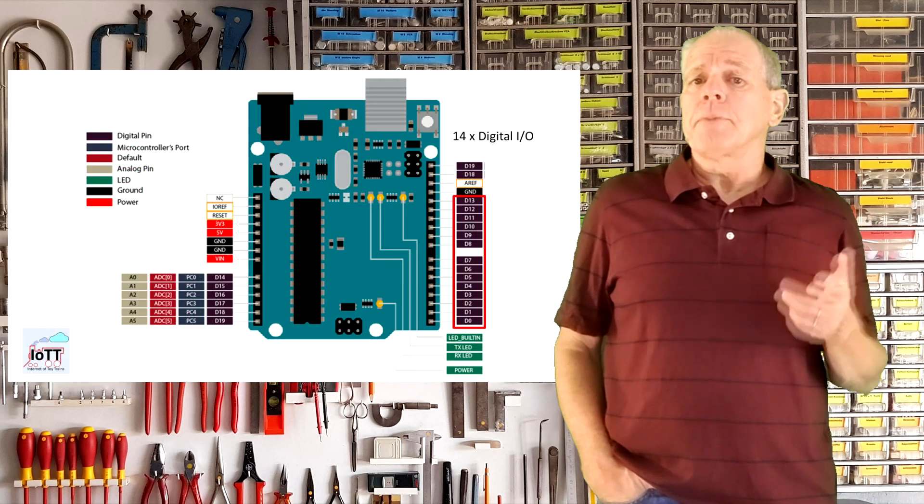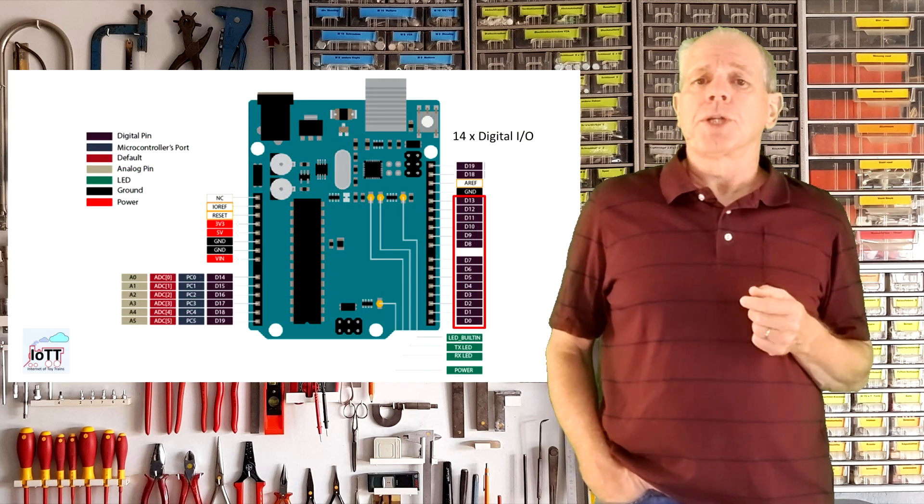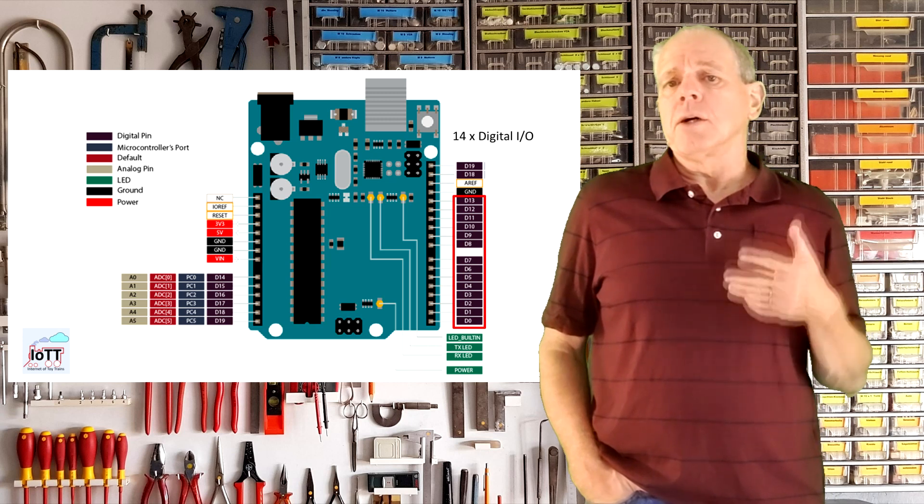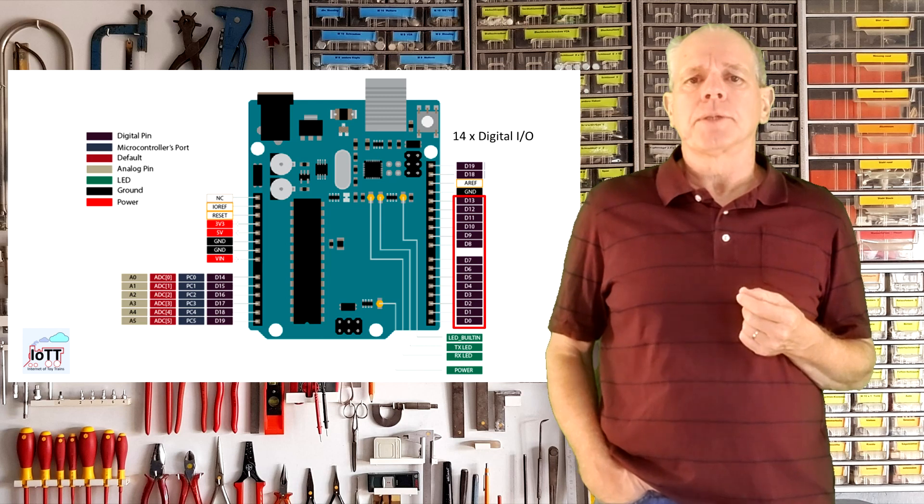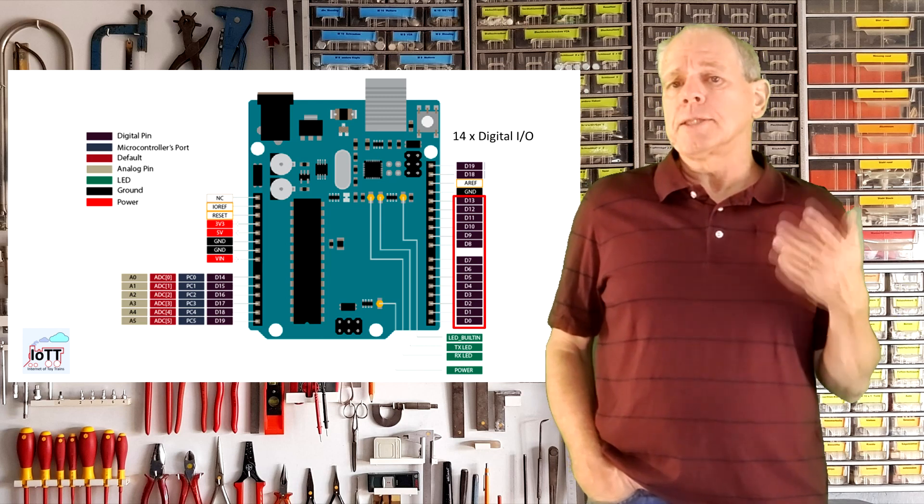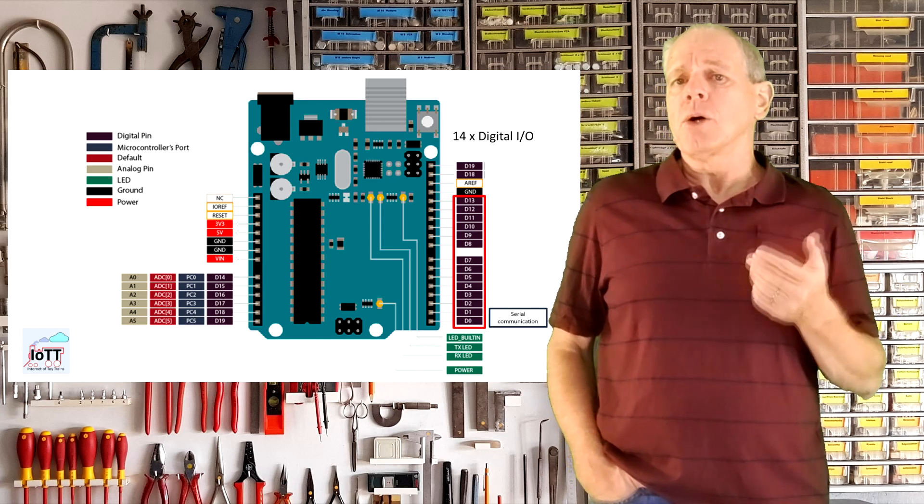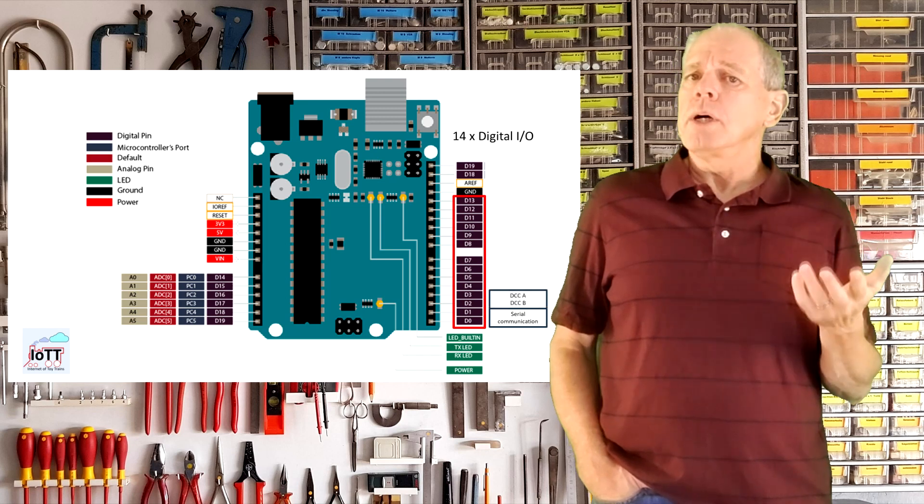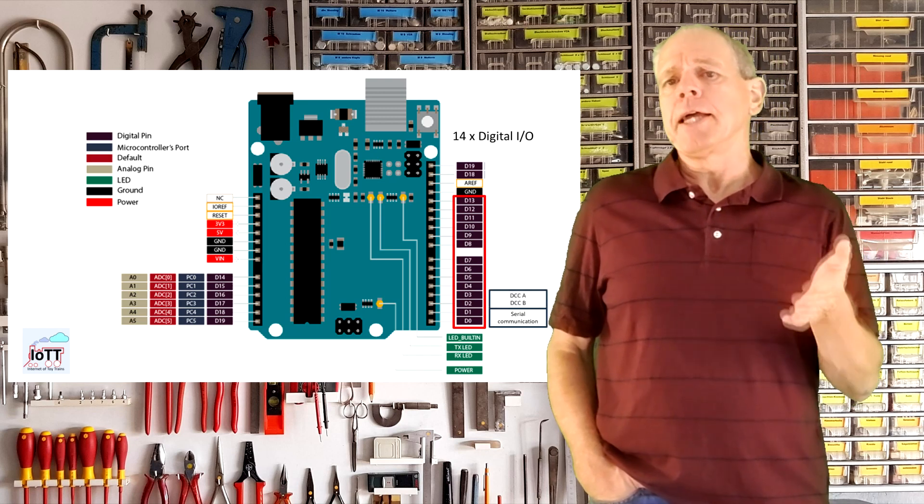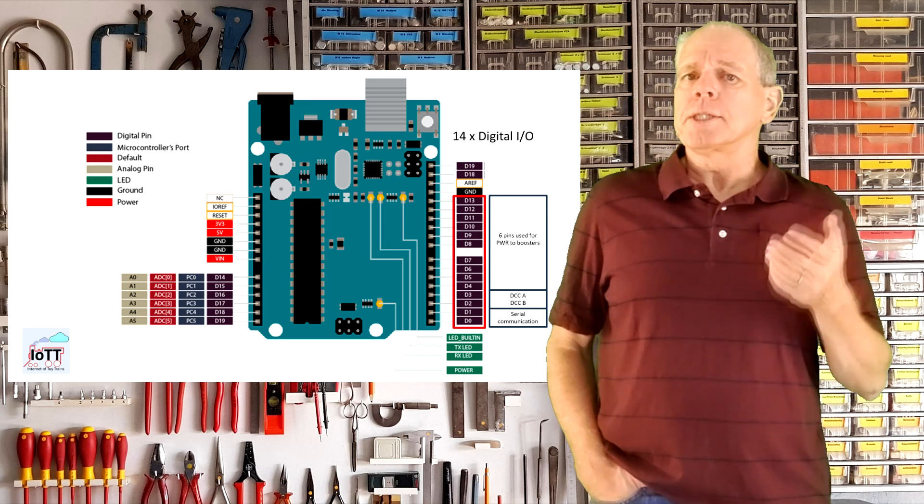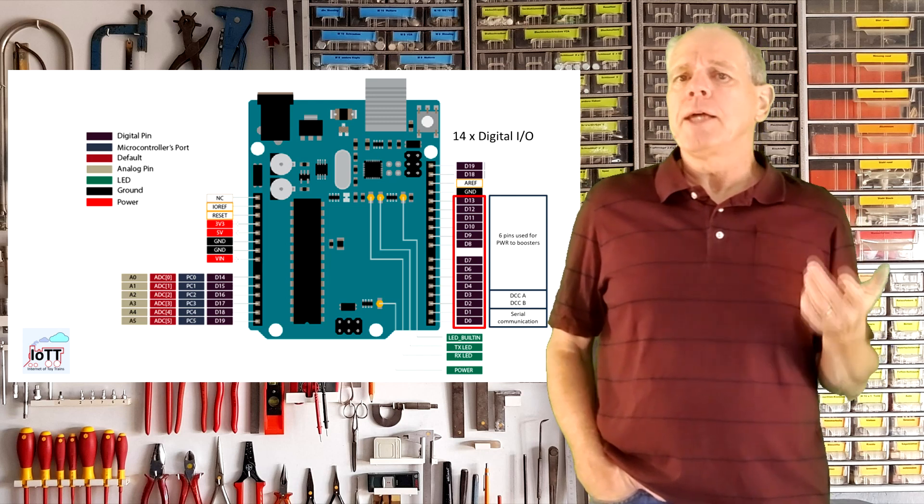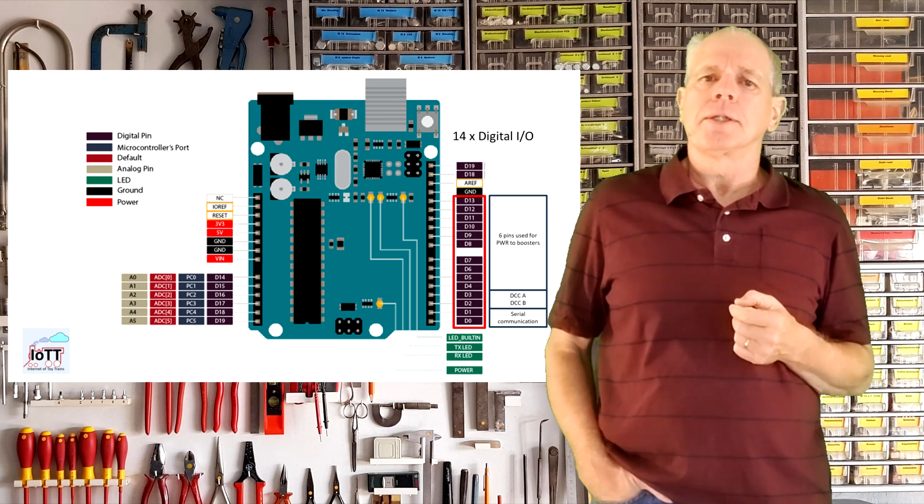Then I thought about an auto reversing option. Looking at the Arduino board there is a total of 14 digital inputs and outputs. So far I use pins 0 and 1 for serial communication, pins 2 and 3 for DCC A and B and 6 of the remaining pins for user selectable assignment to enable or disable the output of each power shield.